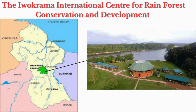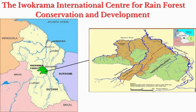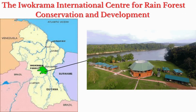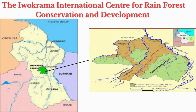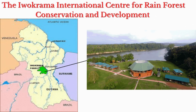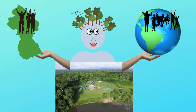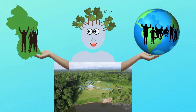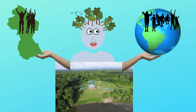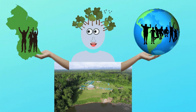The Iwakrama International Center for Rainforest Conservation and Development was established by Guyana and the Commonwealth to promote the sustainable and equitable use of forest resources, while ensuring that it is properly managed and conserved. The center will provide lasting environmental, economic, and social benefits — not just for the citizens of Guyana, but also for the world in general. The objective is to become a model for business development that results in the worldwide conservation of tropical forests.